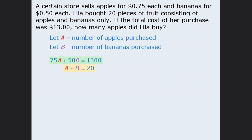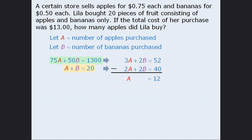At this point we have a system of two equations. To solve this system, we can take the first equation and simplify it by dividing both sides by 25. Then we'll take the second equation and multiply both sides by 2. If we subtract the bottom equation from the top equation, we get A equals 12, which means Leela bought a total of 12 apples.